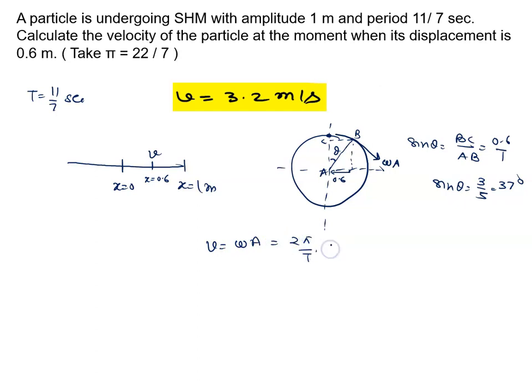Omega a, amplitude is amplitude. 2 into pi k is again 22 by 7, time period is 11 by 7, amplitude is 1. We will calculate, it will be 4 meter per second.